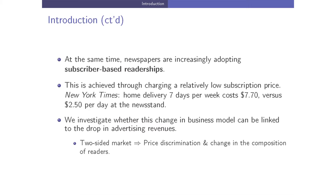Another characteristic of this industry today is that newspapers are increasingly adopting subscriber-based readerships, meaning they charge relatively low subscription prices compared to the newsstand price. What we do in this paper is investigate to what extent the change in the business model — the decrease in advertising revenues — can explain this increase in price discrimination and the change in the composition of readers towards more subscribers and fewer unit buyers.